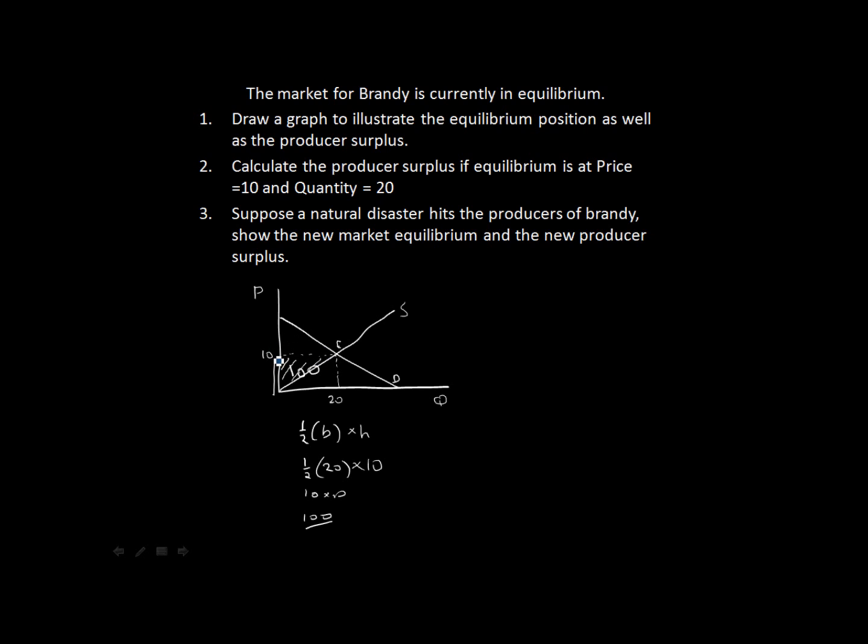And the only way we can have an equilibrium quantity which is less than 20 is if our supply curve shifts to the left. So indicated as S1. And remember, always in economics, you need to illustrate what happened. So indicate which way your supply curve moved.